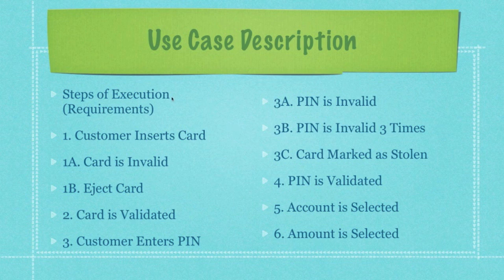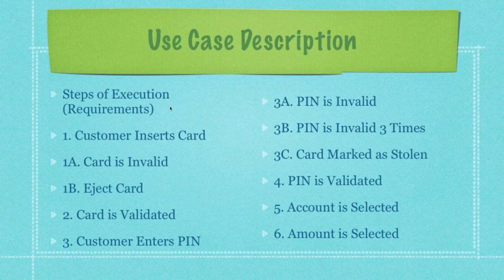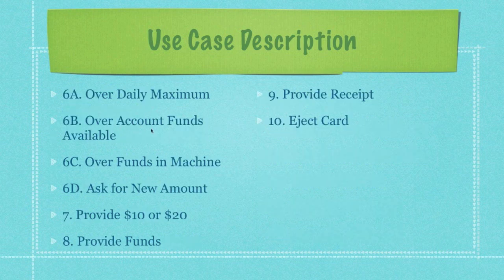Finally, you have your steps of execution, which are often also listed separately as requirements. The customer inserts the card — then we mark off additional things that could happen: card is invalid, eject the card. Card is validated, customer enters PIN — however, PIN is invalid, or PIN is invalid three times, or the card is marked as stolen. If the PIN is valid, the account is selected, the amount is selected, and they are not over their daily maximum or account funds or machine funds, we proceed through all of the additional steps.